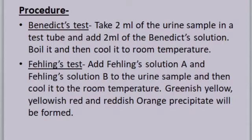Boil it and then cool it to room temperature. Fehling's test: add Fehling solution A and Fehling solution B to the urine sample, then cool it to room temperature. Greenish yellow, yellowish red, and reddish yellow precipitate will be formed.